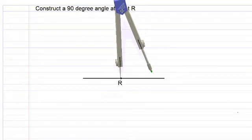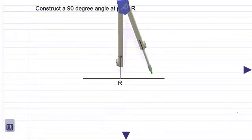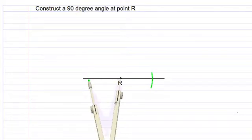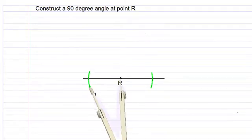We are placing the point of the compass on point R and we are opening the arms of the compass big enough so that we can draw a construction line to cut the black line. Then swing the compass around and we draw a construction line on the other side without changing the distance between the arms of the compass.